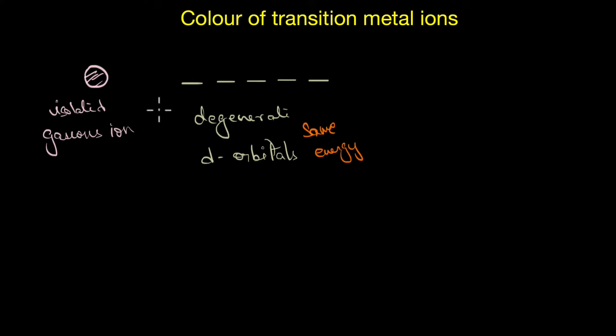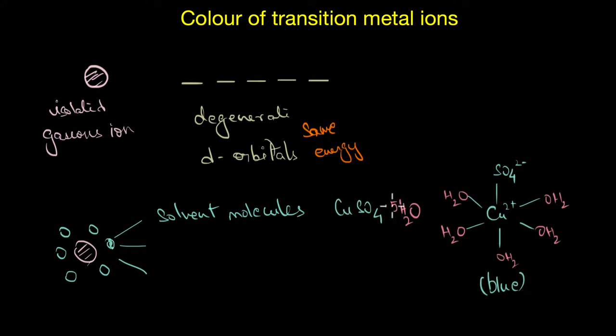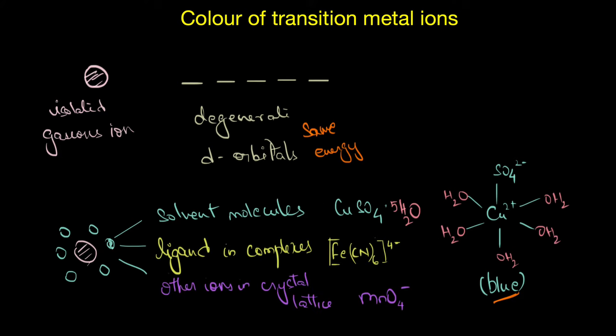But in reality, these ions are not really isolated. They are usually surrounded by solvent molecules. For example, in the case of copper sulfate, hydrated copper sulfate where copper ions are coordinated or associated with five water molecules, and this complex is actually blue in color. The ions can be coordinated with solvent molecules. It can also be coordinated by other ligands in complexes like [Fe(CN)6]3- or even other ions in crystal lattices like in the case of MnO4-. So the ions are not actually isolated but surrounded by different types of ions, depending on whether it is in a crystal lattice or in a solution or in a complex.